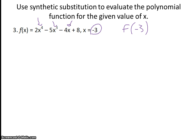You know how to do direct substitution — I would plug in negative 3, raise it to the 4th power to get positive 81, multiply it by 2, then do negative 3 cubed multiplied by negative 5, then negative 3 times negative 4, and add 8. And I'd get a large number.